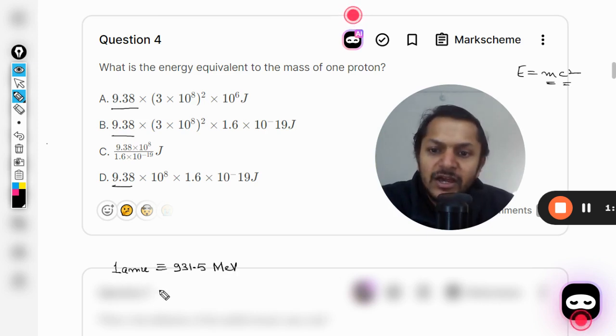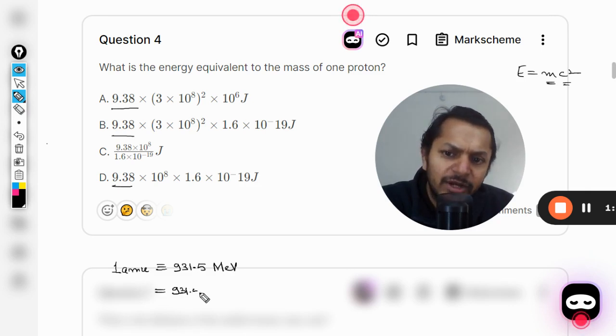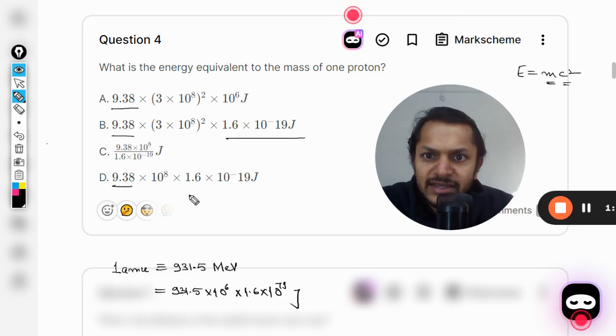931.5 mega can be written as 10 raised to power 6 eV, which will be written as 1.6 times 10 to the negative 19, and the units will be joules. So this kind of similar thing is happening here in B and in D.